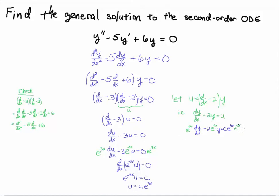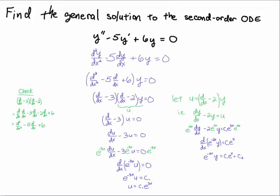Applying e^(−2x) to each term and simplifying, the left-hand side compresses to d/dx[e^(−2x)·y]. On the right, e^(3x)·e^(−2x) — adding exponents with the same base — gives e^x. Integrating both sides: the right-hand side gives c₁e^x plus an arbitrary constant c₂, and the left-hand side integrates to e^(−2x)·y. Multiplying through by e^(2x) gives y = c₁e^(3x) + c₂e^(2x).